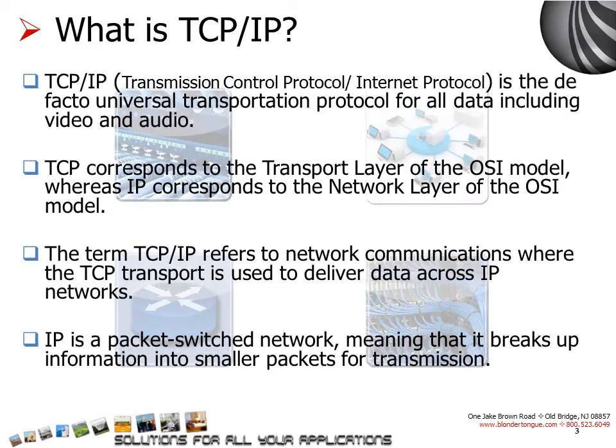Now, let's see what is TCP/IP. Transmission Control Protocol (TCP) and Internet Protocol (IP), technically speaking, are two distinct network protocols. However, the terminology is so commonly used that it is now the de facto standard used to transmit any type of data over the internet. TCP corresponds to the transport layer, that is layer 4 of the OSI model, whereas IP corresponds to the network layer, that is layer 3 of the OSI model.